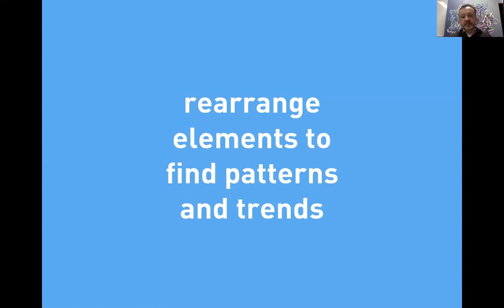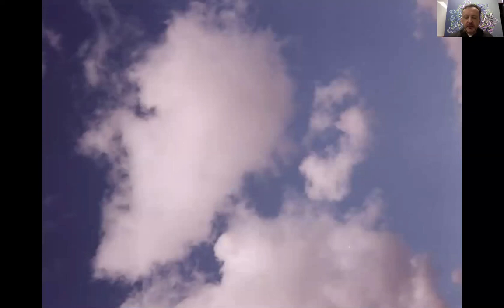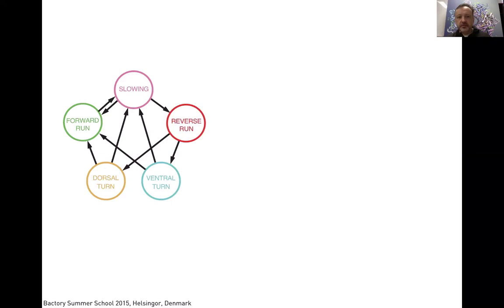This idea of rearranging elements to find patterns and trends is very critical. If things are not in the right order, people will see patterns anyway in random stimuli — it's called pareidolia. You probably didn't go to school to learn how to recognize faces, and yet you see one in the clouds. Here is a small network. You probably didn't get a sense of the patterns between connections in the nodes, because you have to try to figure out the rearrangements of these arrows.